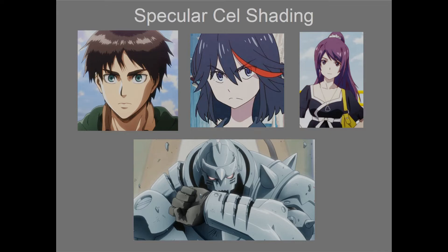Most anime don't go as crazy as Attack on Titan. Most of them just go very basic — they only use specularity for hair and eyes. And then also for metal: certain metals will get a specular treatment. For example, in Full Metal Alchemist they gave Alphonse specular highlights. It's not always used, but it's nice to know, especially if you intend on making characters — at least for the eyes, you want that specularity.